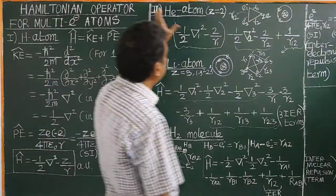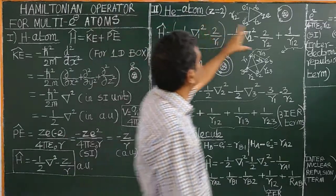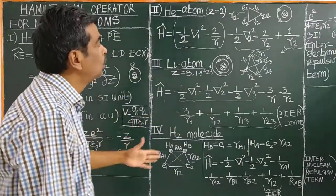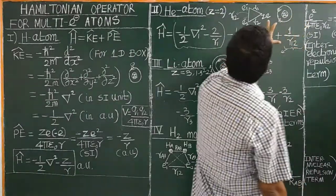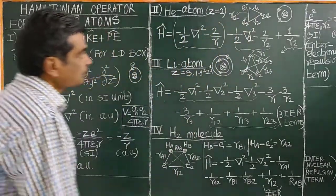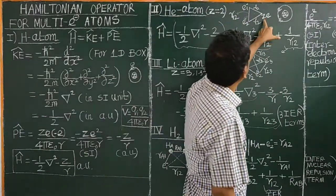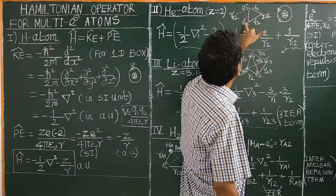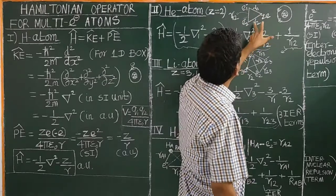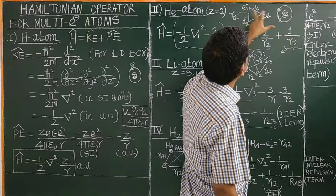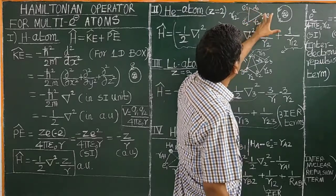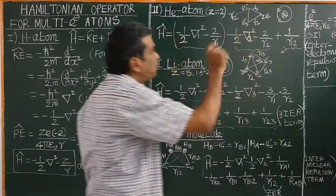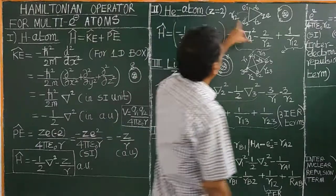For helium atom, Z equals 2. There is a nucleus, and two electrons revolve around it. The distance between the nucleus and electron 1 is R1, the distance between the nucleus and electron 2 is R2, and the distance between the two electrons is R12.